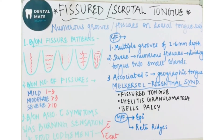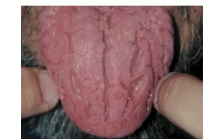Fissured tongue, also called scrotal tongue, is a developmental disturbance seen in the tongue. In this condition, numerous grooves or fissures are present on the dorsal surface of the tongue. Normally deep grooves are not present, but in this developmental disturbance many grooves or fissures are seen on the dorsal surface.